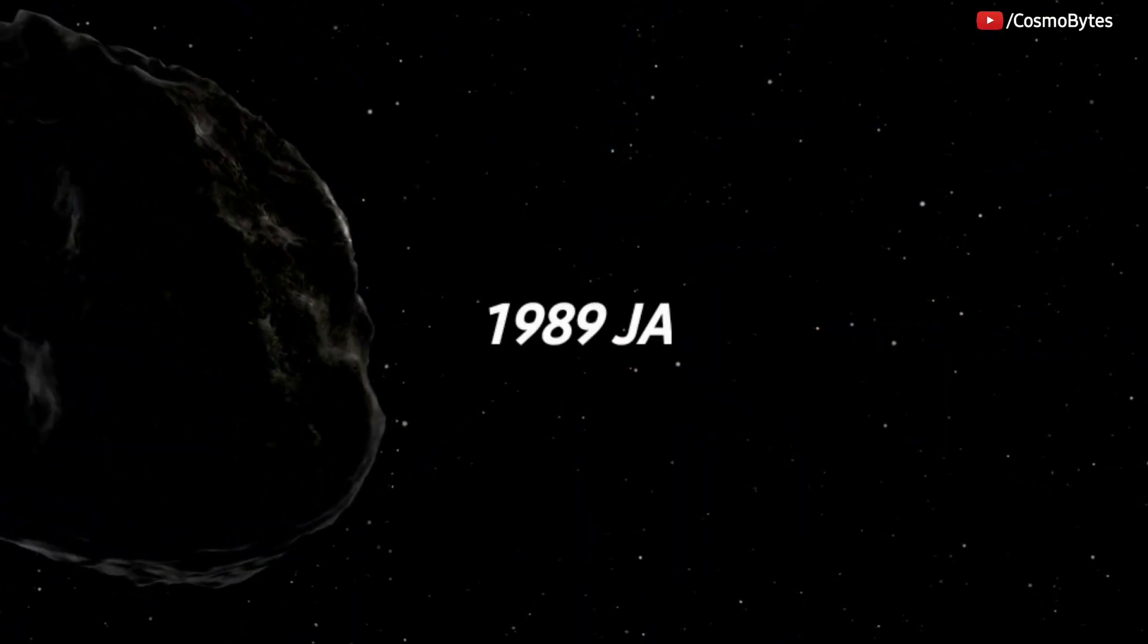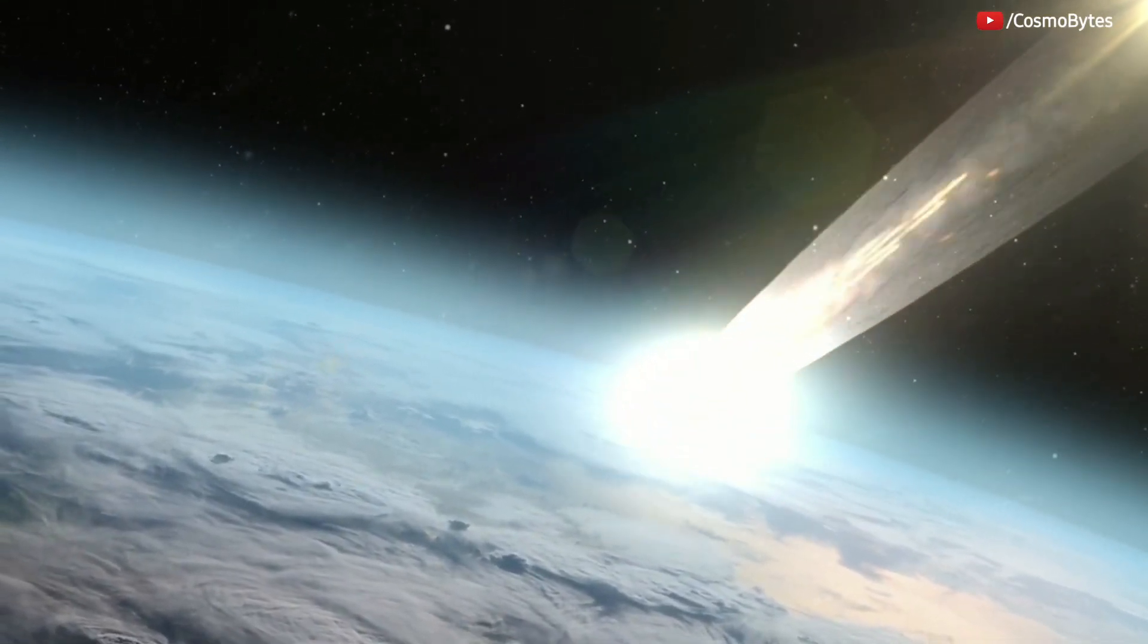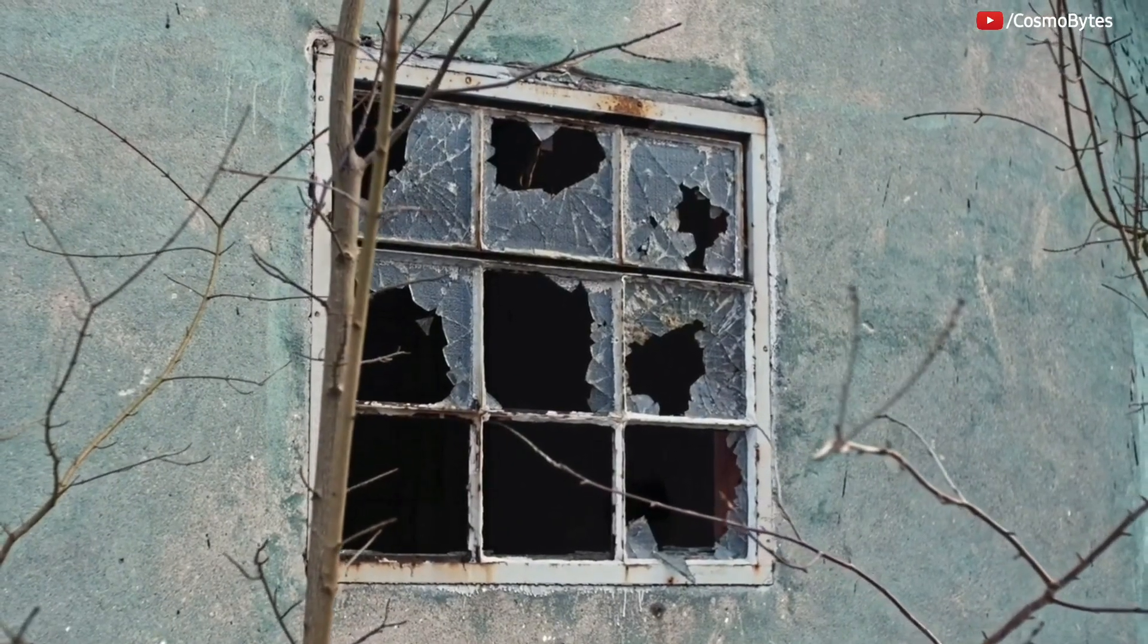Asteroid 1989 JA is a stony Apollo-type asteroid similar to the Chelyabinsk asteroid that entered Earth's atmosphere in 2013, shattering windows over six Russian cities.